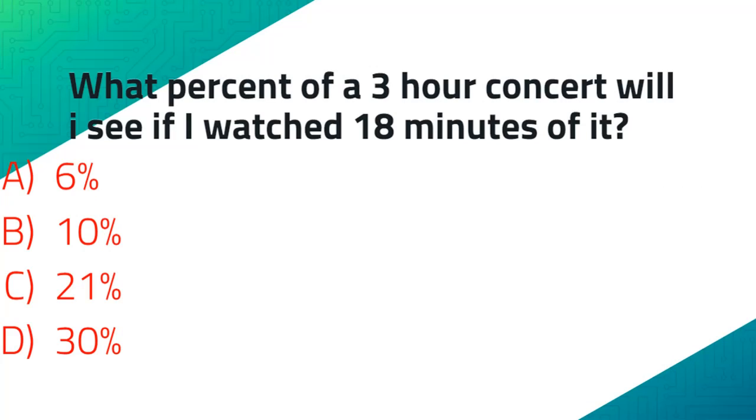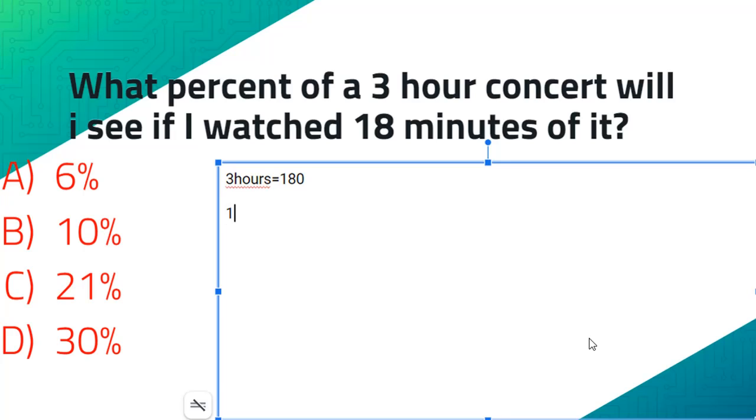What percent of a three hour concert will I see if I watched 18 minutes of it? Because there's 60 minutes in an hour, three hours would equal 180 minutes. And 18 minutes of 180 is perfectly one tenth. If we convert one tenth into a decimal it would be 0.1, and 0.1 converted into a percentage would be 10 percent. So our answer would be B.